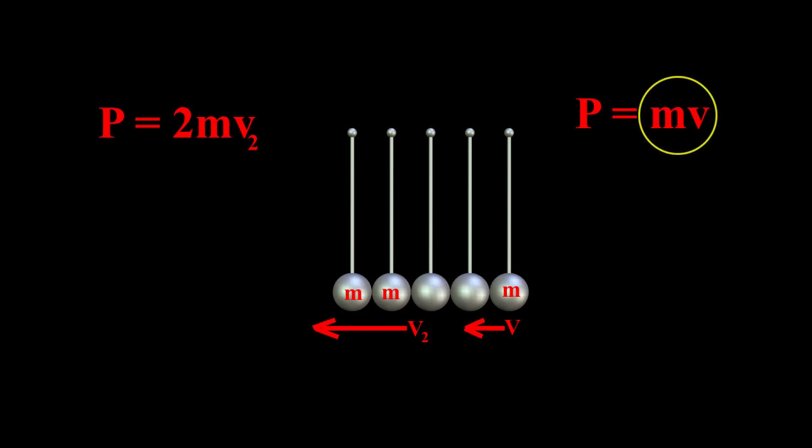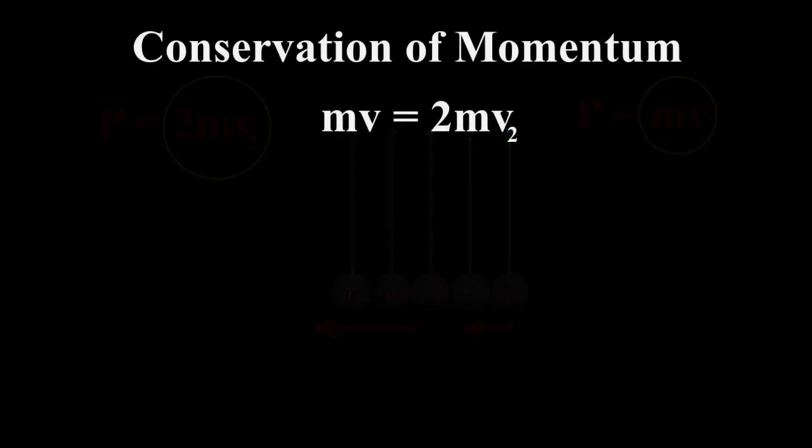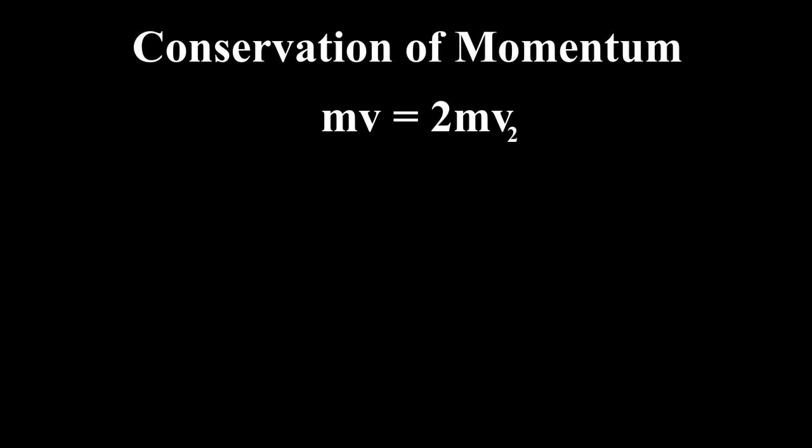So, we have m times v equals 2m times v2. Solving for v2, we get v2 equals v divided by 2, or v over 2. This means the two spheres would be moving with a velocity of v over 2, one half the original velocity.